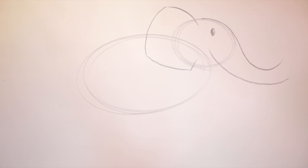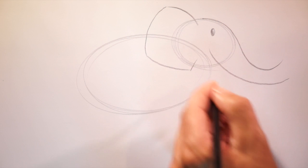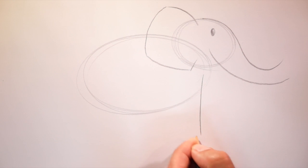Now, for the front leg. Starting at the bottom of the circle, we're going to bring a line down, across, and back up towards the body.